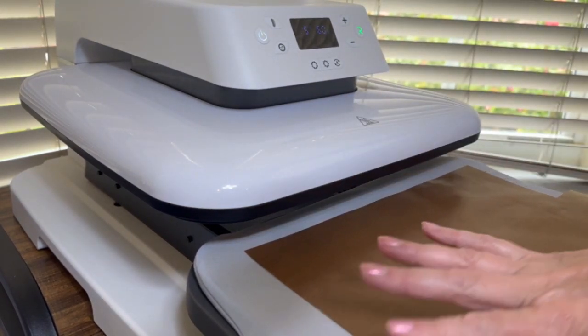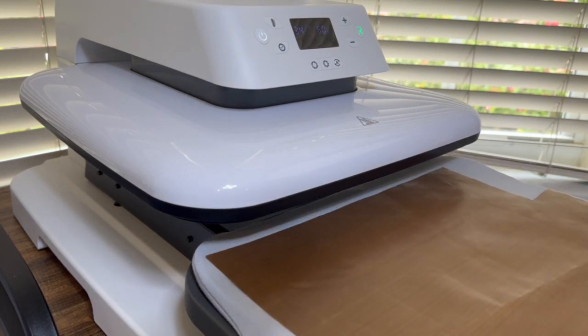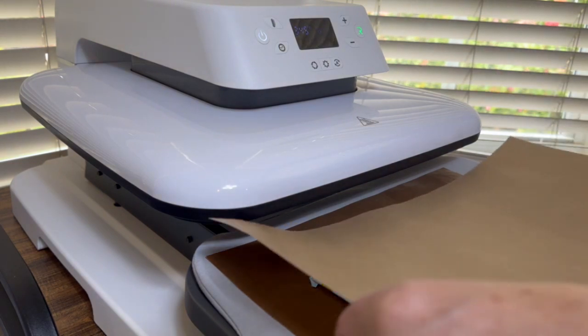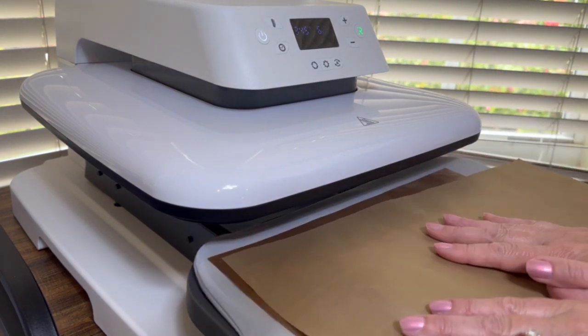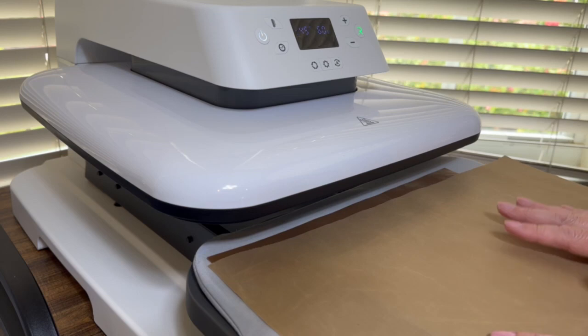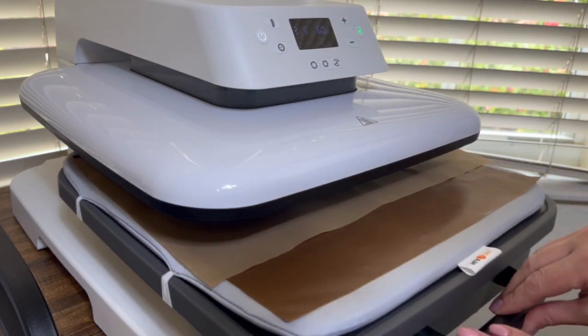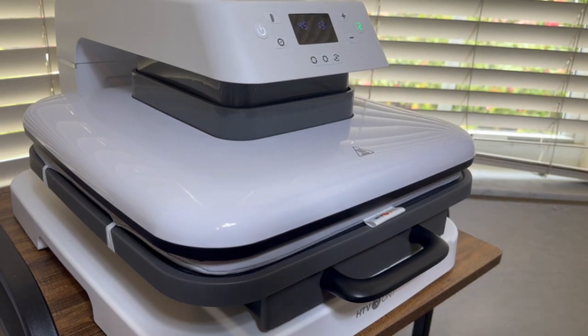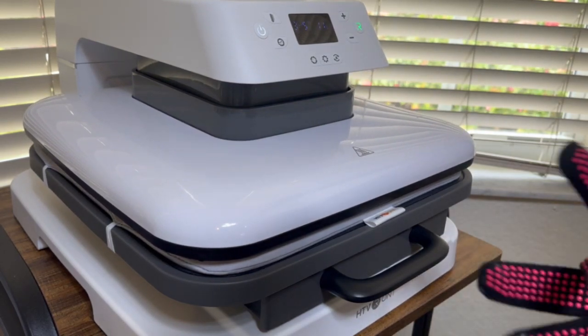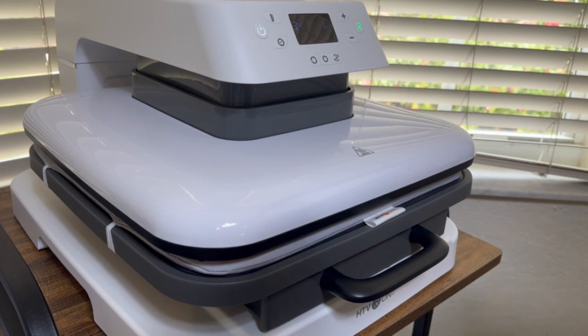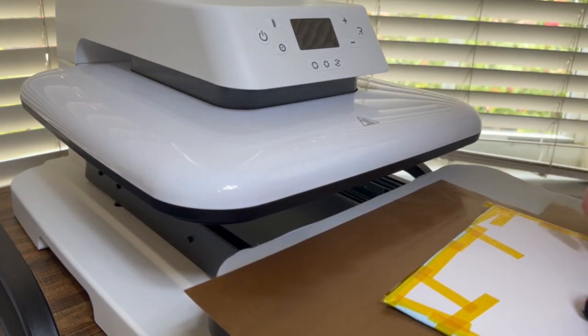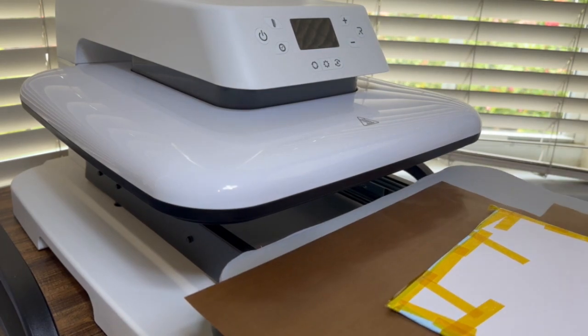Next we're going to apply the puzzle and then again we're going to use another sheet, either of Teflon or parchment paper, just to protect it. Let's go ahead and put it in and hit the button and do 60 seconds. We are almost there, so I'm going to go ahead and put my heat resistant gloves on. Let's go ahead and take the tape off. Take the gloves off.